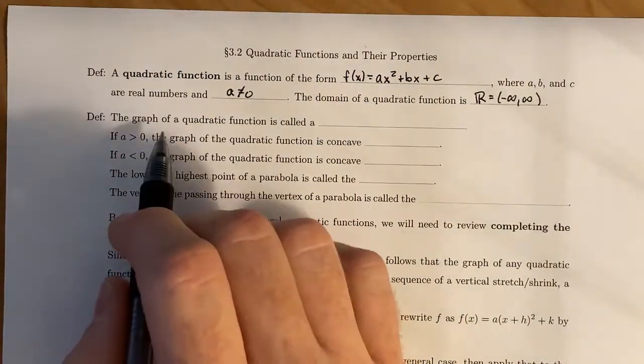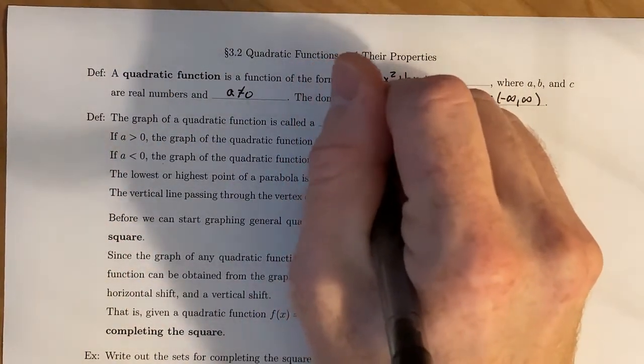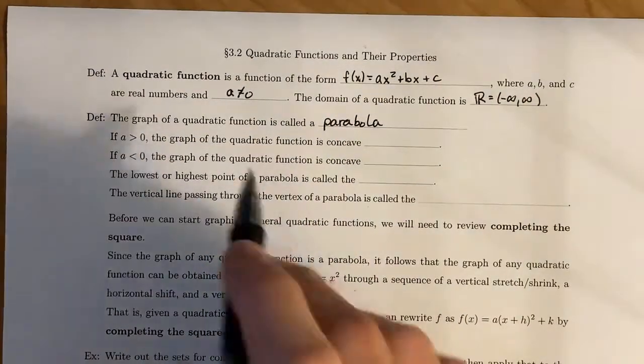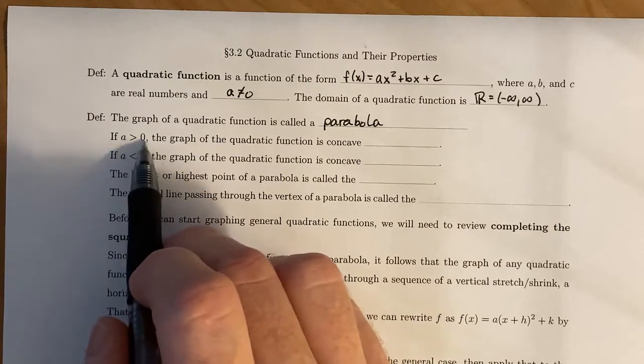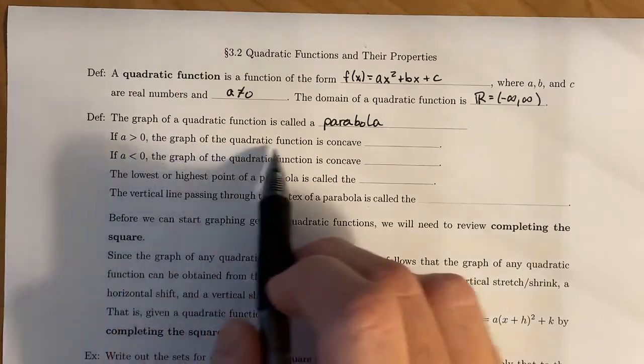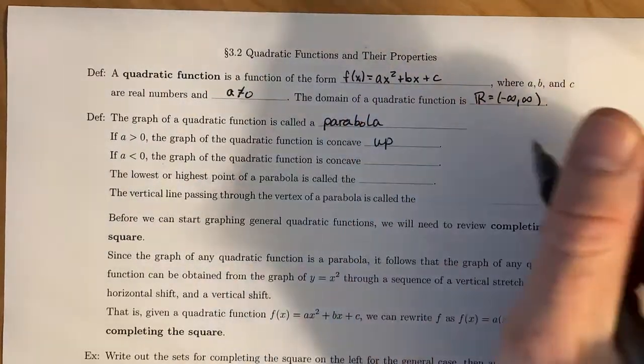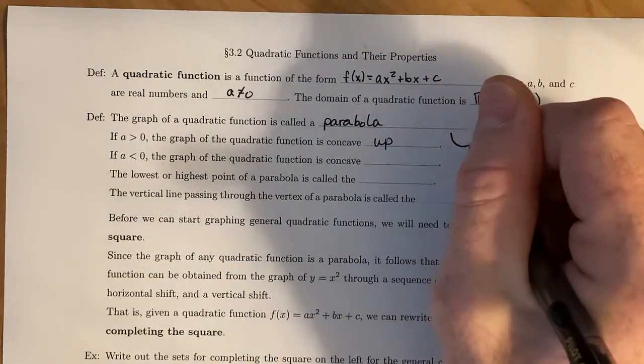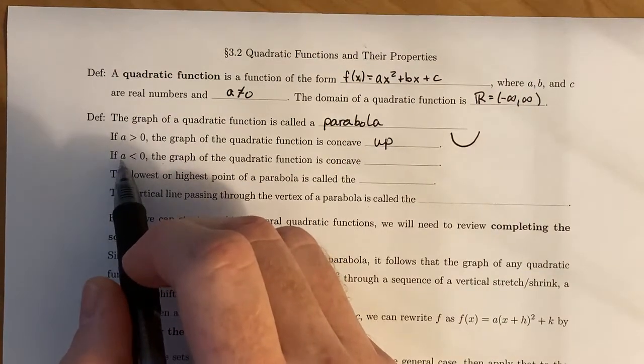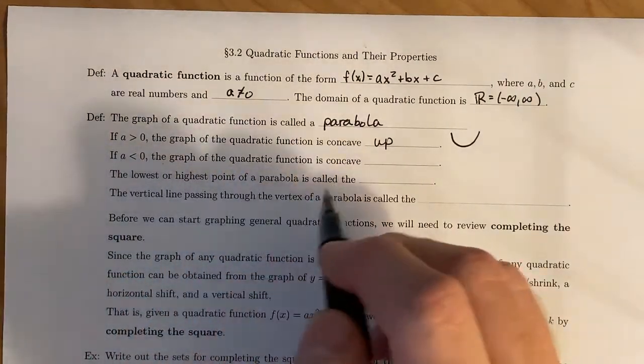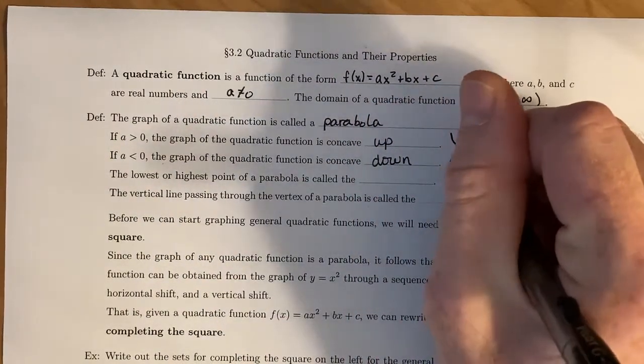Now the graph of a quadratic function is called a parabola. And there's going to be two cases. If a is positive, the graph of the quadratic function is said to be concave up, and that looks like a smiley face. If a is negative, the graph of the quadratic function is concave down, and that looks like a frowny face.